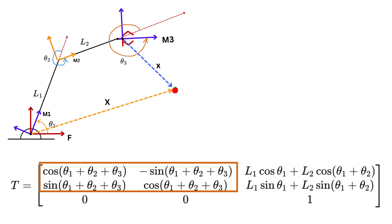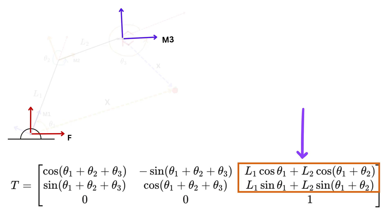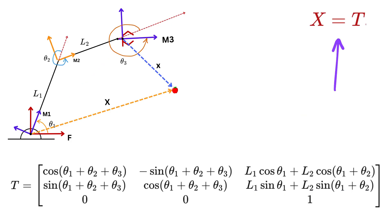The final transformation matrix T beautifully combines rotation and translation into one compact form. The top left 2 by 2 block represents a single rotation by the sum of all three joint angles, theta 1 plus theta 2 plus theta 3. The top right part of the matrix gives the position of the origin of the M3 frame, or the end effector, expressed in the fixed frame. Finally, we have big X equals T times small x.